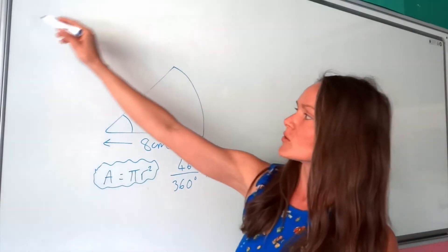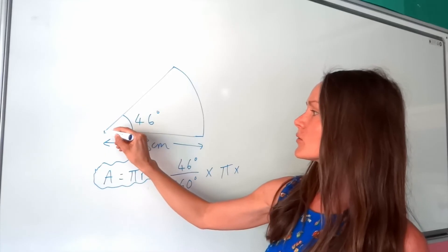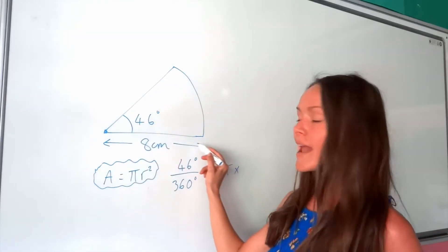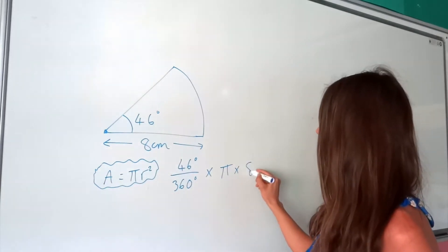Well if you imagine the whole circle, this is the centre of the circle here, you can see the radius has been given to us. It's 8 centimetres. So you just times by 8.